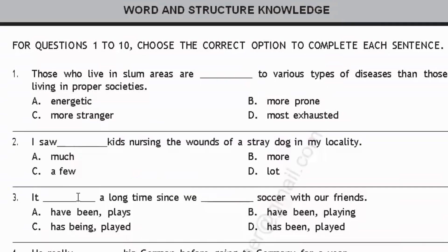For questions one to ten, choose the correct option to complete each sentence. The first question: 'Those who live in slum areas — slum areas means areas of a city with poor living conditions — are dashed to various types of diseases than those living in proper societies.' It can't be 'energetic' since they don't have sufficient facilities. Option B, 'more prone,' means likely to suffer, so those who live in slum areas are more prone to various types of diseases. Option B is your correct answer.